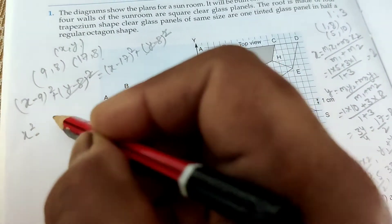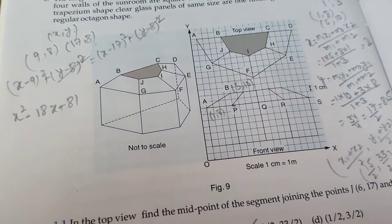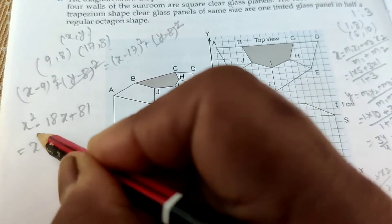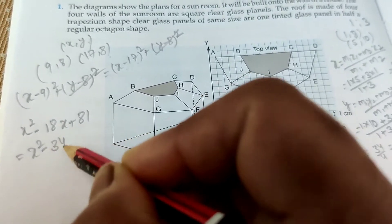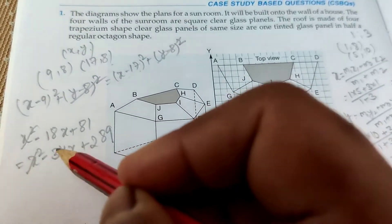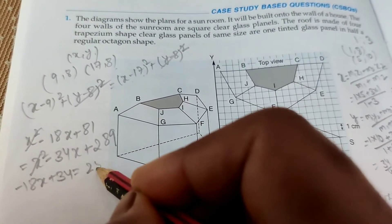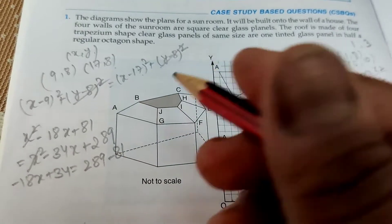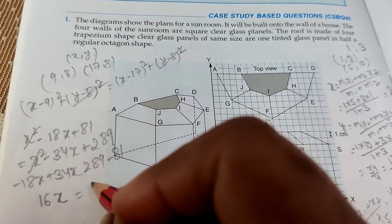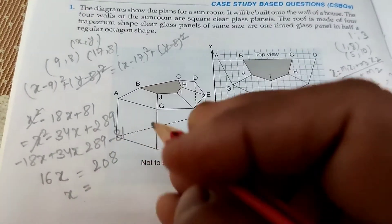x squared minus 18x plus 81 equals x squared minus 34x plus 289. x squared cancels. Minus 18x plus 34x equals 289 minus 81. Arrange: 34x minus 18x is 16x equals 208. Now cancel: 208 by 16 is 13.